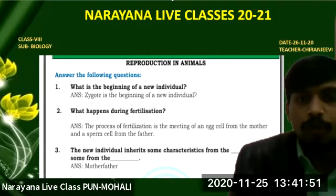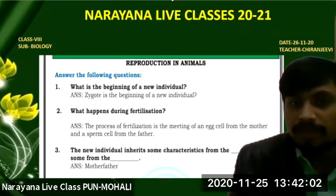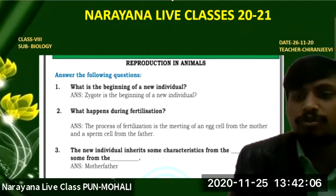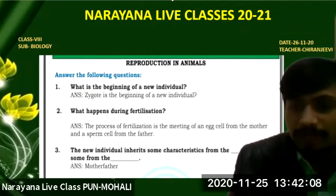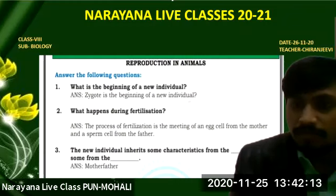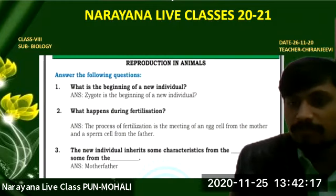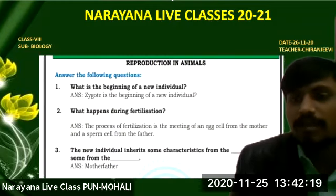Next one: what happens during fertilization? The process of fertilization is the meeting of an egg cell from the mother and a sperm cell from the father. The fusion of both male and female gametes is called fertilization. The sperm released from the male fuses with the egg cell and forms the fertilization process.